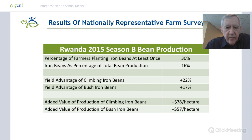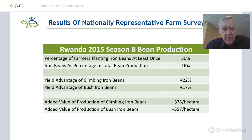We did a nationwide survey in 2015 of farm households and found that after four years, about 30% of farmers in Rwanda had tried growing the high-yielding beans. The most important figure is that the yields of the biofortified beans are 20% higher than the yields of the beans farmers were currently growing.